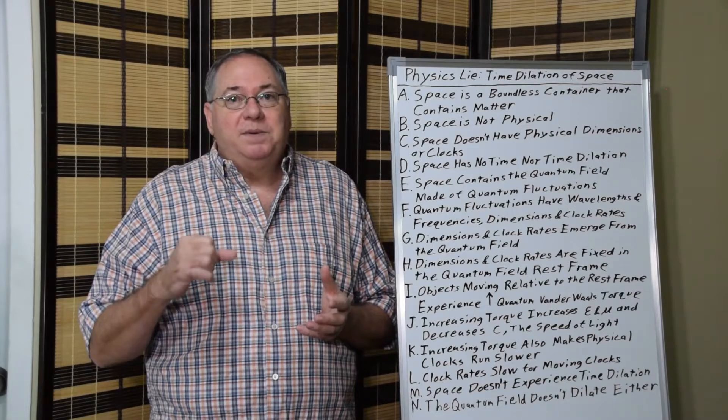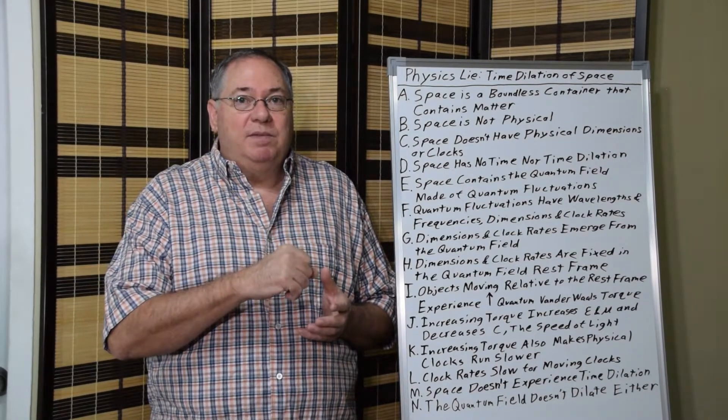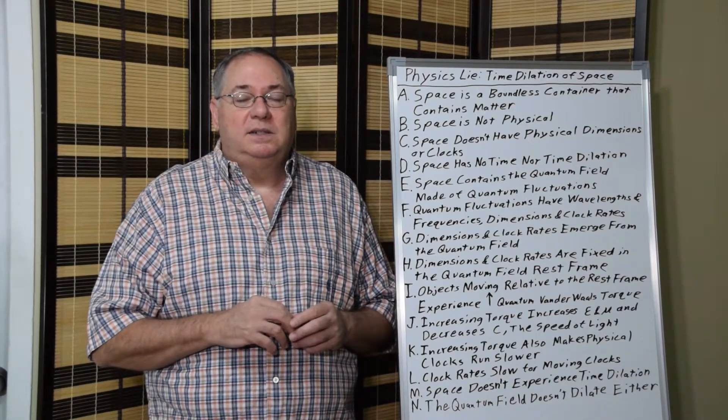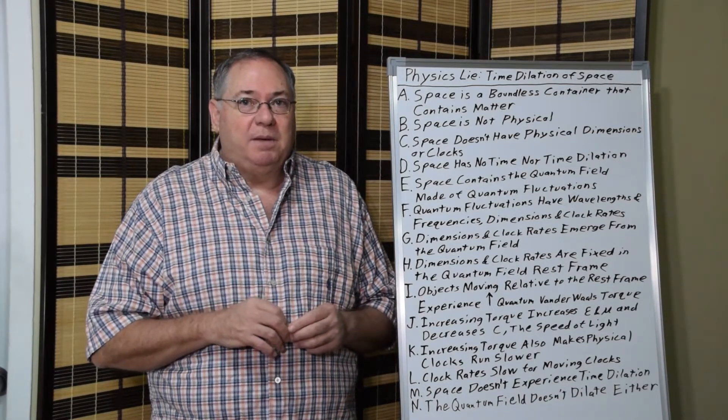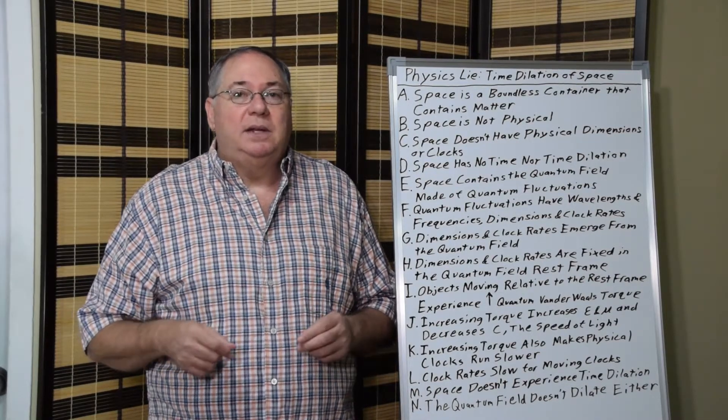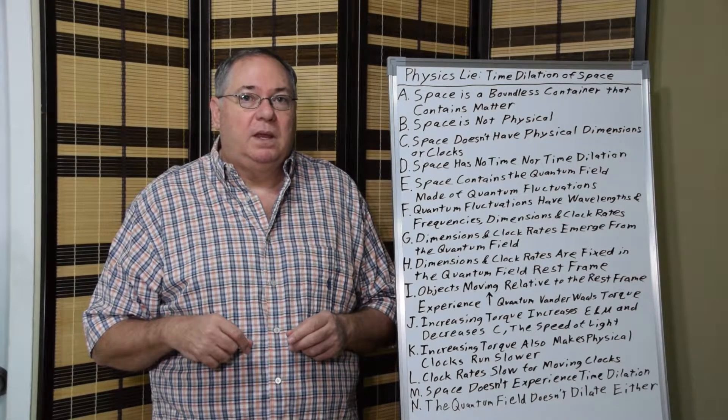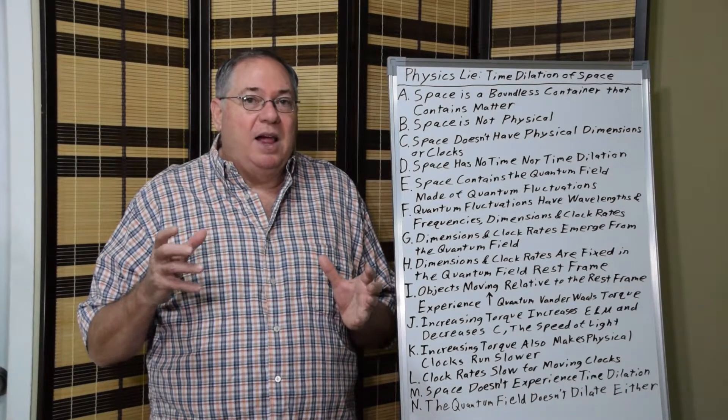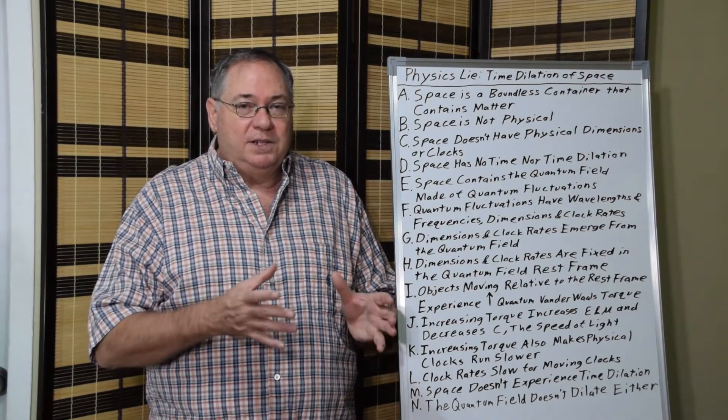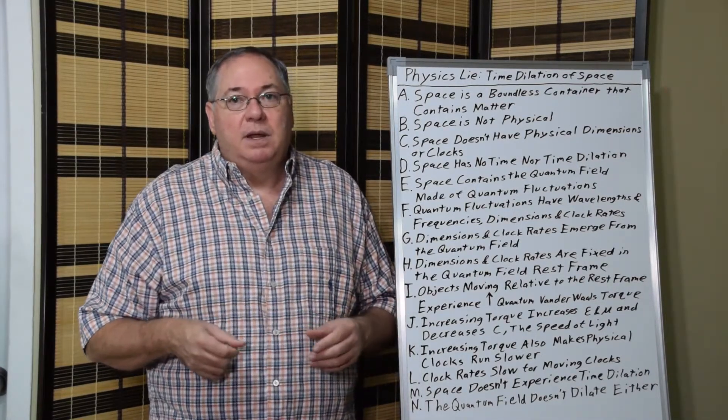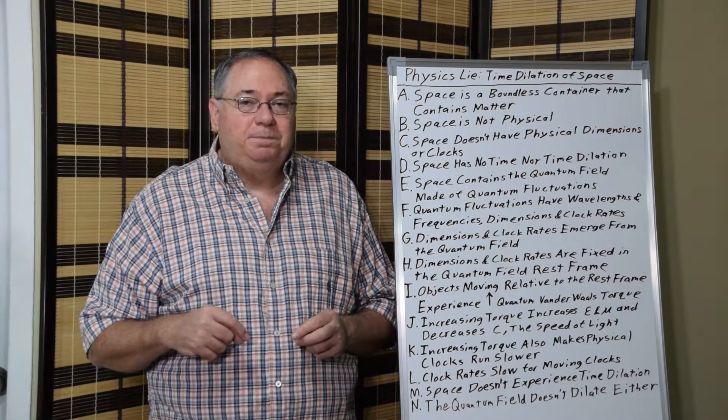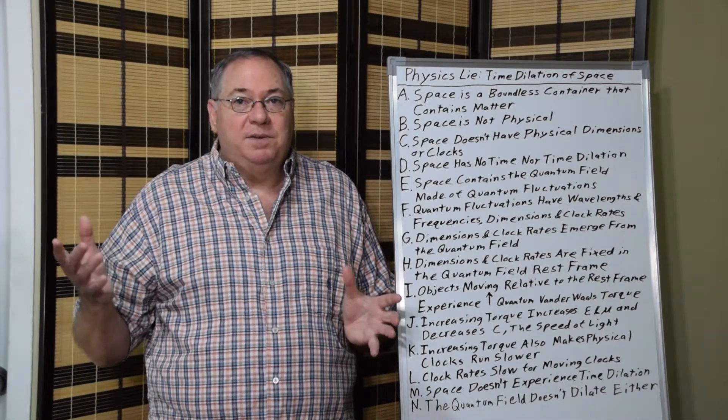By having an object move relative to the quantum field, it slows the clock rates of the physical clocks that are associated with that object. And that's how we get clock rate slowing. And clock rate slowing is how we have to think about the relativistic effects on time for objects moving relative to the quantum field rest frame and relative to each other.